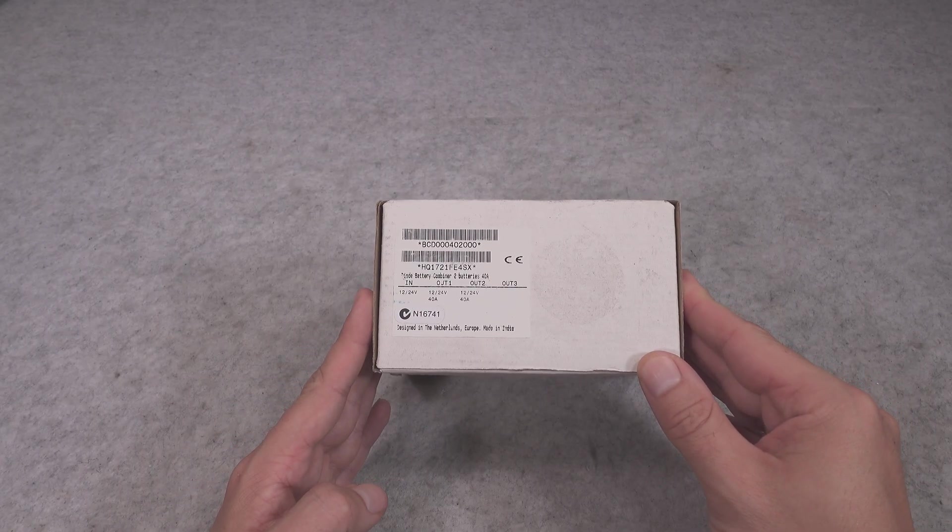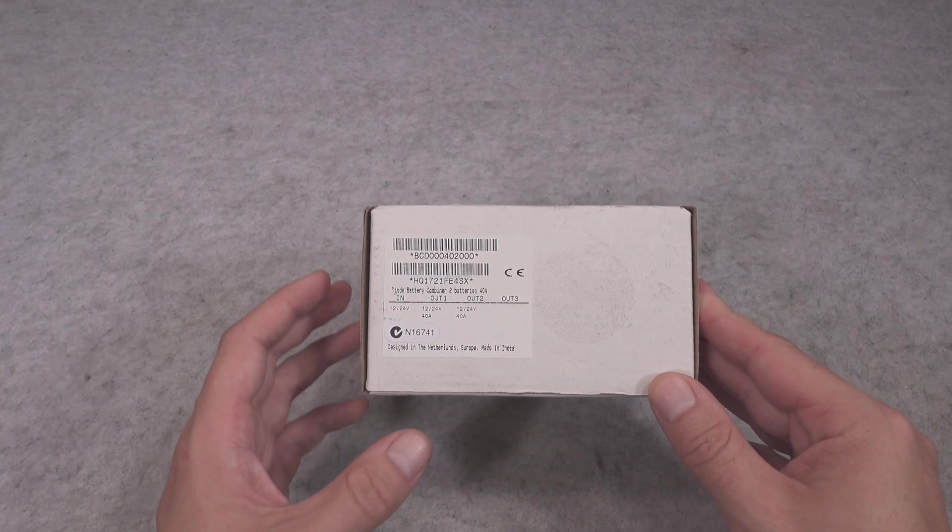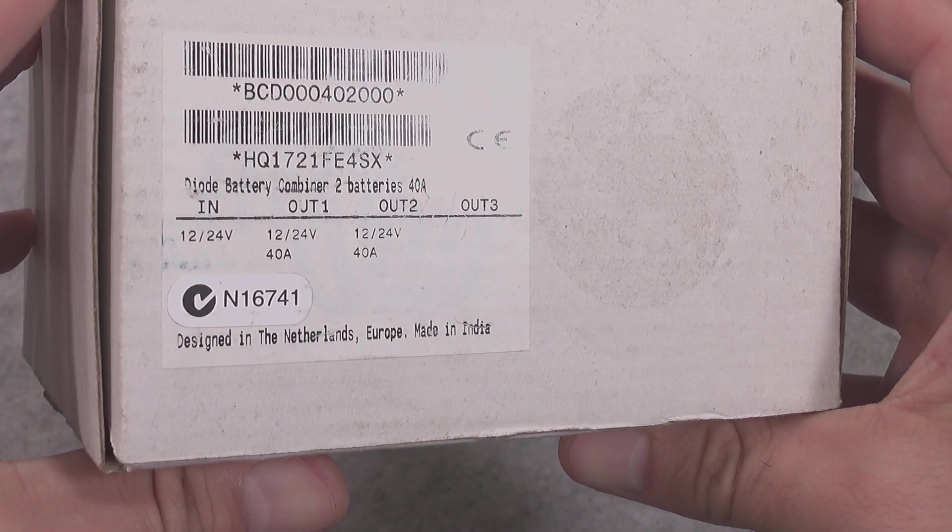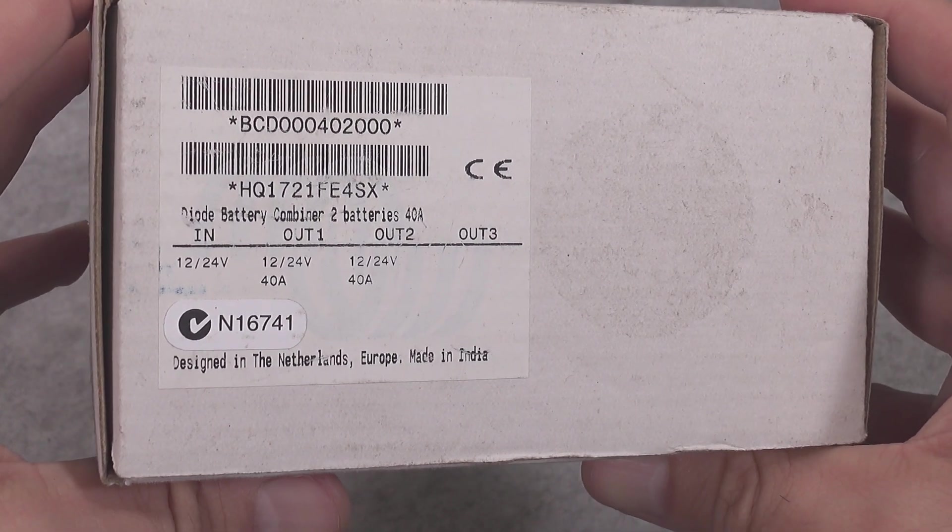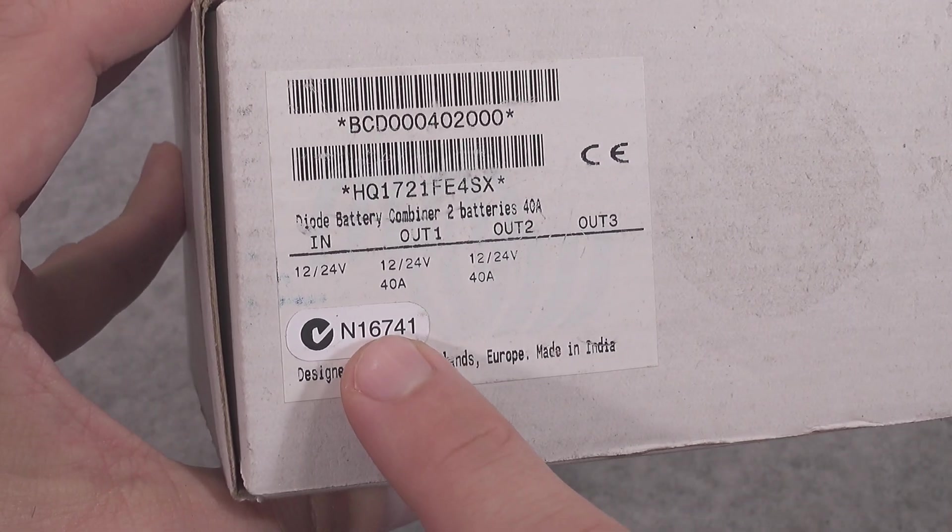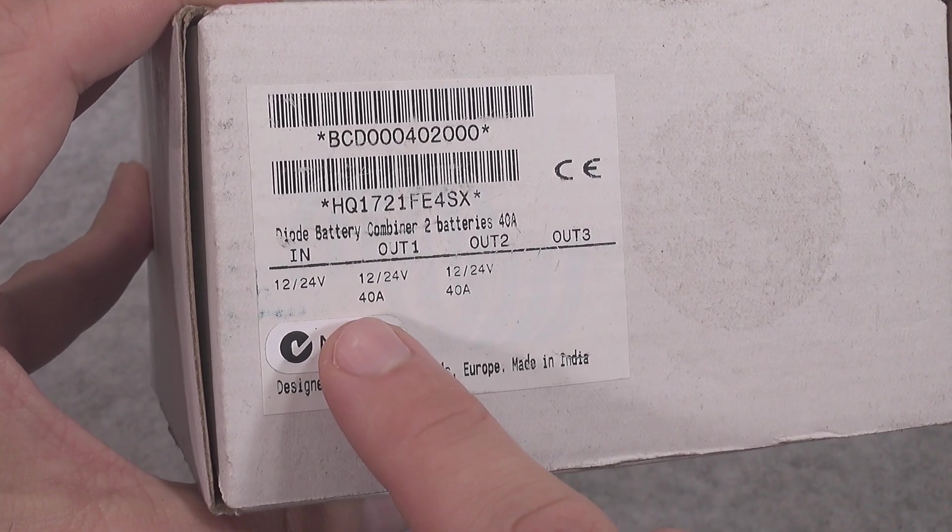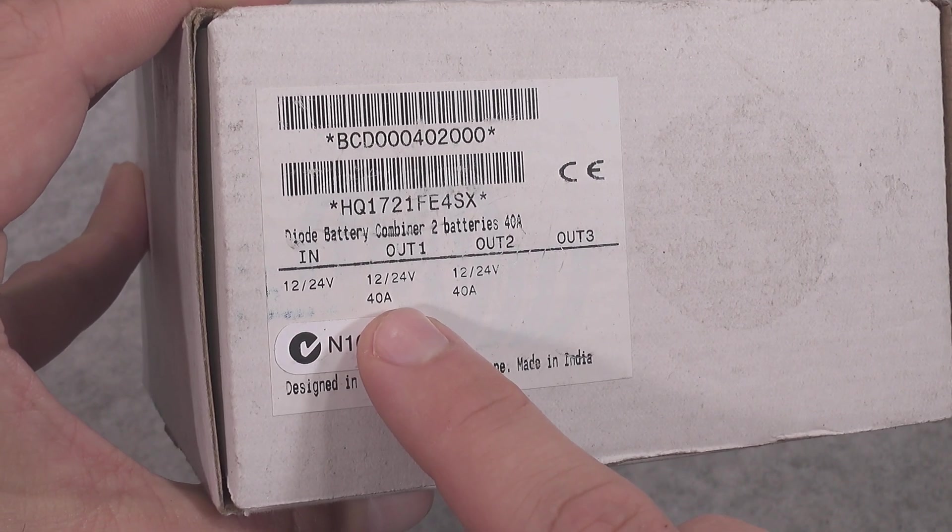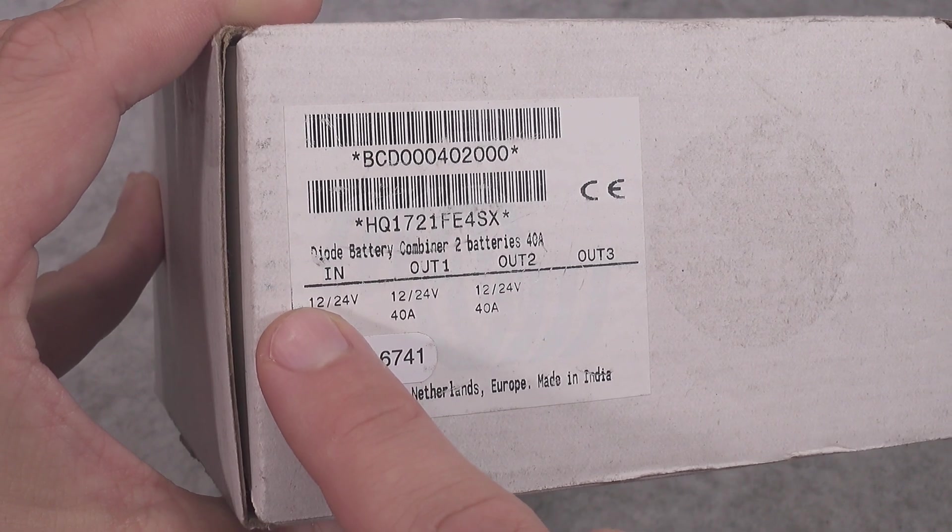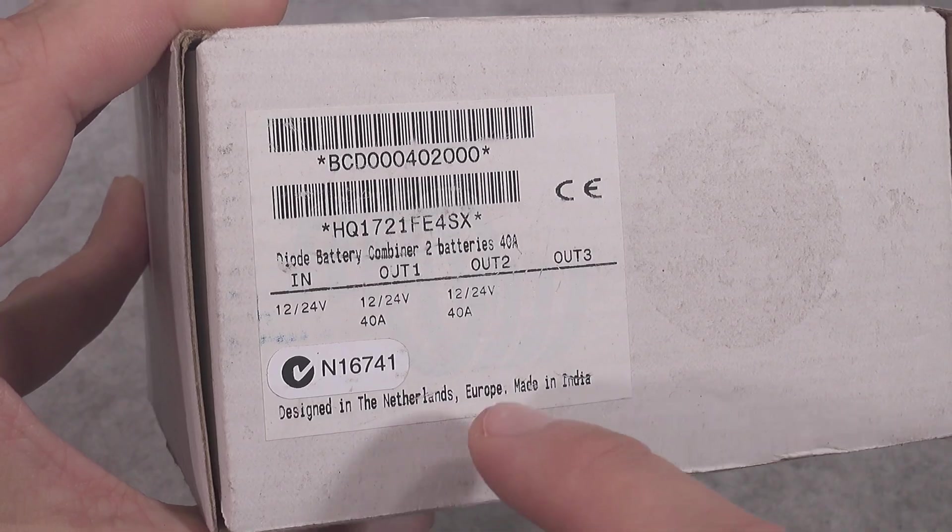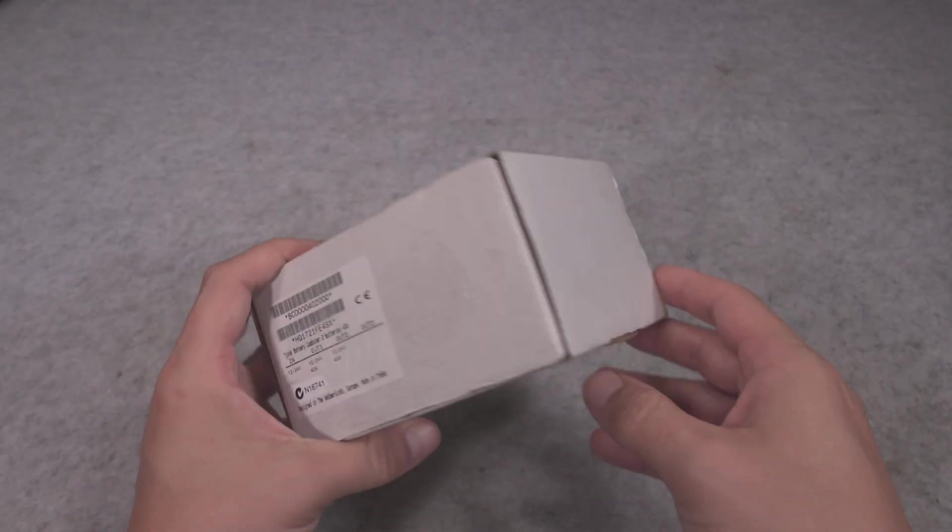It's basically based on diodes so you are going to get voltage drop, but it says they are using Schottky diodes so it should be quite low. They are making versions for a lot of currents and mine is 40 amp rating and it allows you to work from 12 volt to 24, and this is how it presents.